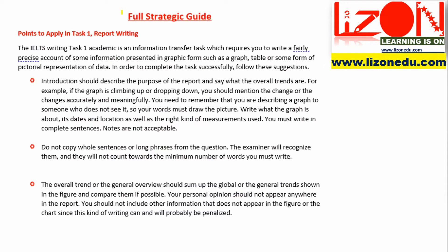Strategic guide points to apply in Task 1 Report Writing. The IELTS Writing Task 1 Academic is an information transfer task which requires you to write a fairly precise account of some information presented in graphic form, such as a graph, table, or some form of pictorial representation of data. In order to complete the task successfully, follow these suggestions.